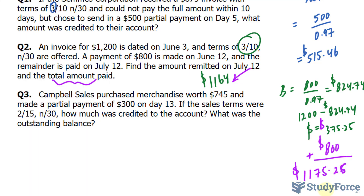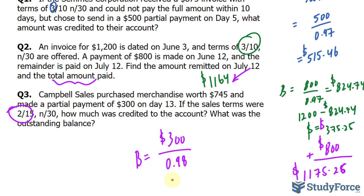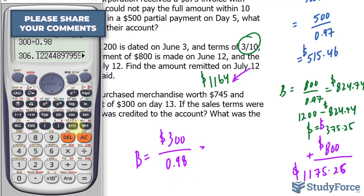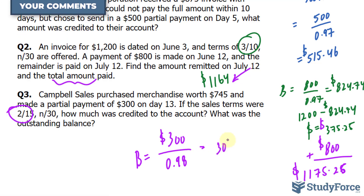Lastly, Campbell's Sales purchased merchandise worth $745 and made a partial payment of $300 on day 13. The sales terms were 2/15 N/30, meaning they are within the discount range. How much was credited to the account? We take 300 divided by 0.98 — that is 98% converted to a decimal — and 300 divided by 0.98 gives us $306.12, which is the amount credited.